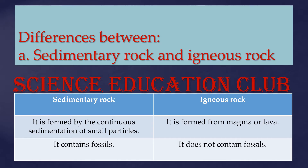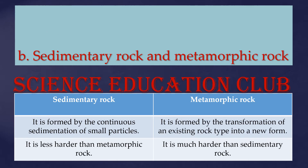Sedimentary rocks are formed by the continuous sedimentation of small particles. Igneous rocks are formed from magma or lava. Sedimentary rocks contain fossils, whereas igneous rocks do not contain fossils.